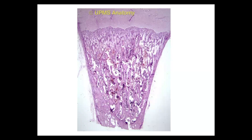Endochondral bone formation, HND staining. This picture is taken from our internet website, where you can excellently see the bony collar. This is the bony collar forming first around the shaft of the bone. This territory is formed by desmal ossification.